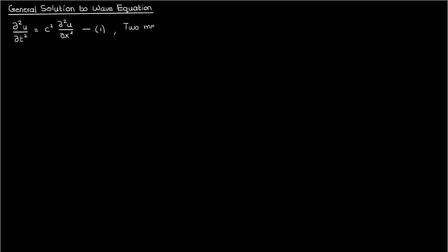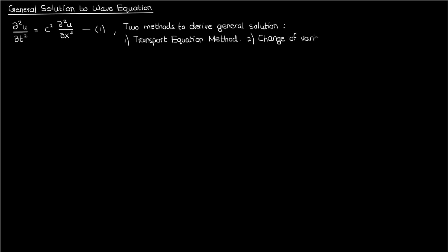There are two ways we're going to derive the general solution to the wave equation. The first method is longer and involves the transport equation, while the second method involves a very simple change of variables. This video will talk about the transport equation method, and the next video will talk about the change of variables method.